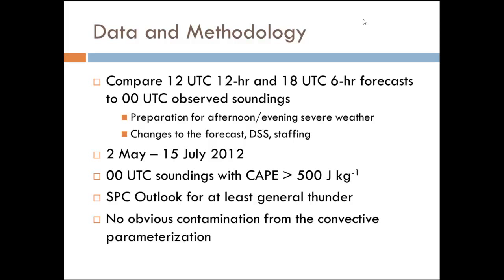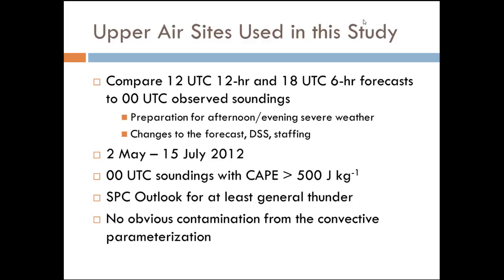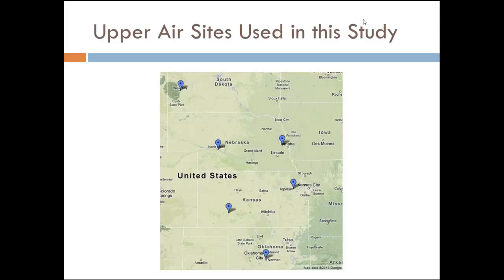The way I identified contamination was using BuffKit, looking at the overall temperature and moisture profile over several hours, seeing if anything indicated the shallow or full convective scheme had activated. I also looked at the model output to see if convection was being produced at 0Z or within the next hour. The upper air sites used were all in the Central Plains: Rapid City, North Platte, Omaha, Topeka, Dodge City, and Norman — looking at that period from May 2nd to July 15th of 2012 at these six sites.